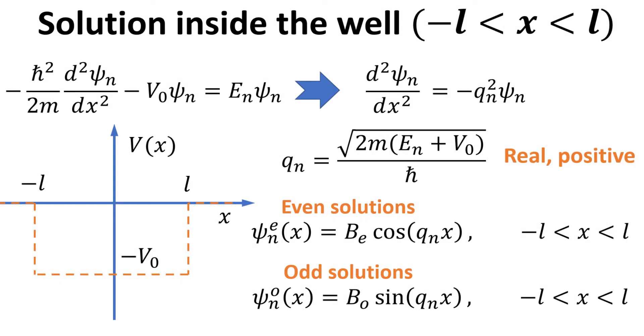The solutions to this differential equation are often written in terms of complex exponentials or real cosine functions. Since we are dealing with confined states, we know they have to be standing wave solutions, thus it is appropriate to use cosines and sines. The former represents the even solution, while the latter odd.